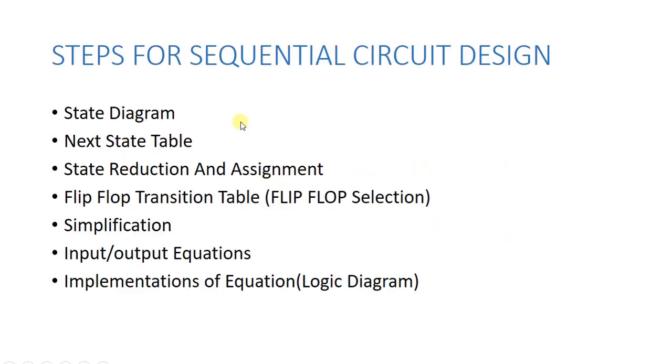You will make a state diagram. From the state diagram, you will choose the next state table. If state reduction is possible then you will do state reduction. In this procedure, we will not have a state reduction in this example, because it already has a state reduced.